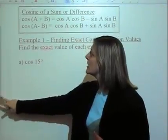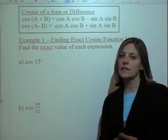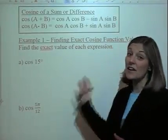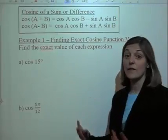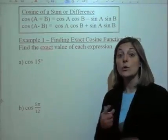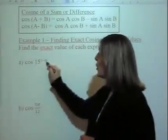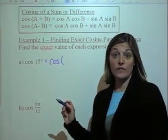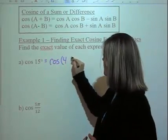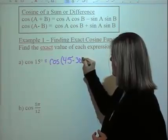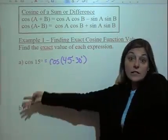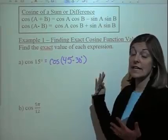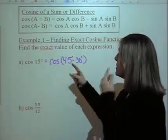If we take a look at cosine of 15, it would be hard to find an exact value — you wouldn't be able to use it in the calculator. It's not on our unit circle, so one thing we can do is use a sum or a difference using values that we already know. We could say that cosine of 15 is the same thing as 45 degrees minus 30 degrees, because 45 minus 30 is 15, and now we can use our difference identity to solve and get an exact value.